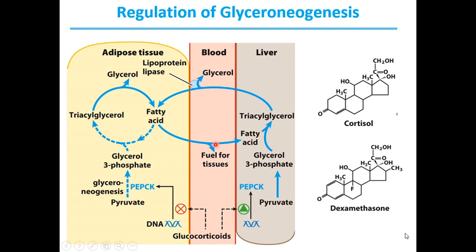At the same time, glucocorticoids cortisol and dexamethasone suppress expression of the gene encoding phosphoenolpyruvate carboxykinase in adipose tissue, resulting in decreased glyceroneogenesis in adipose tissue. As a result, formation of triacylglycerols is decreased and free fatty acids are not recycled but are released into the bloodstream. Thus, regulation of glyceroneogenesis in the liver and adipose tissue affects lipid metabolism in opposite ways: a lower rate in adipose tissue leads to more fatty acid release, whereas a higher rate in the liver leads to more synthesis of triacylglycerols. The net result is an increase in flux through the triacylglycerol cycle. When glucocorticoids are no longer present, flux through the cycle declines as phosphoenolpyruvate carboxykinase expression increases in adipose tissues and decreases in the liver, resulting in more triacylglycerols made in adipose tissues.